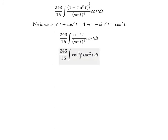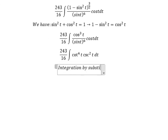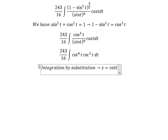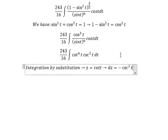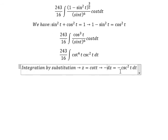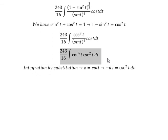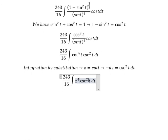So we have cosine t to the power of 4 times cosine t to the power of 2. Now we can use integration by substitution. We let z equal to cos(t), so dz equals negative sin(t) dt. Because we don't have a negative, we place a negative sign in here.